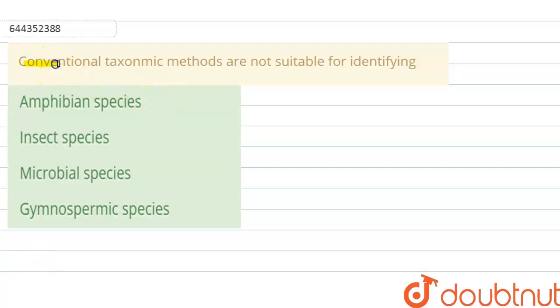Hello student, here the question is: conventional taxonomic methods are not suitable for identifying amphibian species, insect species, microbial species and gymnospermic species. First of all we need to discuss about the conventional taxonomic method.